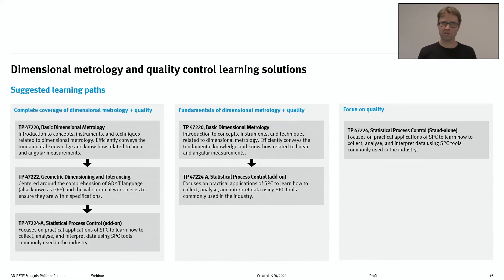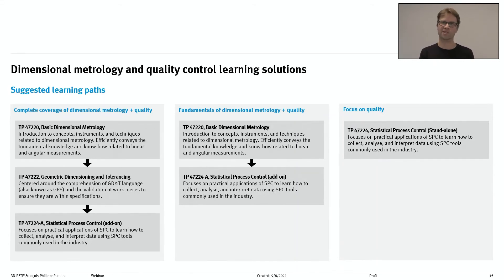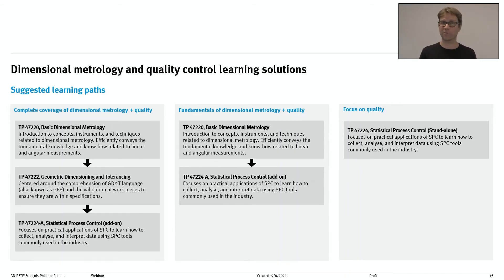If we put these solutions together, how can we build a package that suits your specific needs? We've come up with three suggested learning paths. The first is complete coverage of dimensional metrology and quality control, including all three packages. The second skips GD&T and focuses on Basic Dimensional Metrology plus Statistical Process Control. The third is Statistical Process Control standalone, for those who only want to focus on quality. The packages can be used independently or combined.